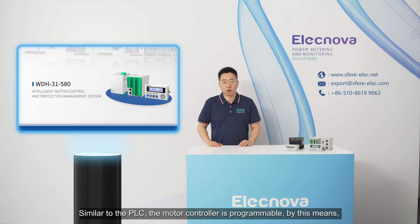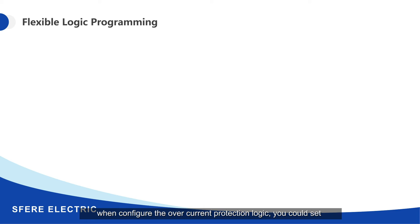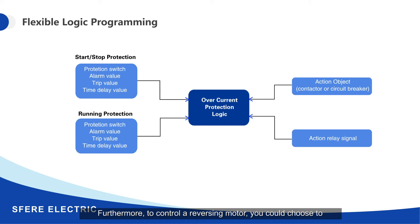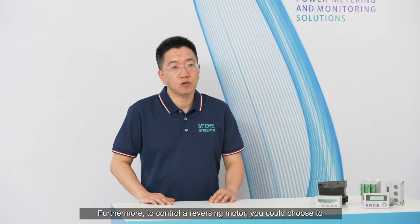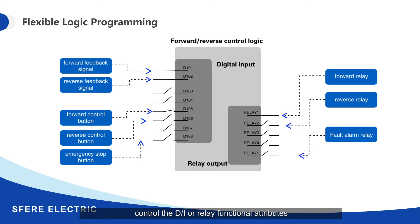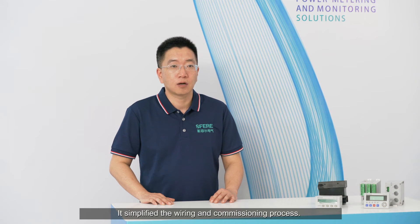Similar to the PLC, the motor controller is programmable. By this means, the device has various applications. For example, when configuring the overcurrent protection logic, you could set parameters during the start or running process respectively. Furthermore, to control a reversing motor, you could choose to control the digital inputs or relay functional attributes according to the relevant diagrams. This simplified the wiring and commissioning process.